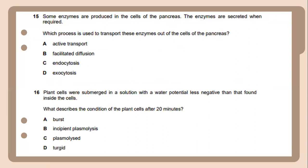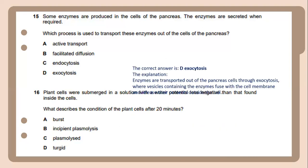Number 15. Some enzymes are produced in the cells of the pancreas. The enzymes are secreted when required. Which process is used to transport these enzymes out of the cells of the pancreas? The answer for this question would be exocytosis. This can be explained when the enzymes are transported out of the pancreatic cells through exocytosis, where vesicles containing the enzyme fuse with the cell membrane and release the enzymes outside the cells.